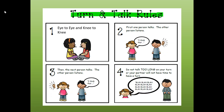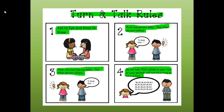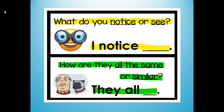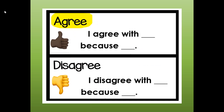Let's go over our turn and talk rules. Number one, eye to eye and knee to knee — make sure you face the person you're talking to. Number two, first one person talks, the other person listens. Number three, then the next person talks, the other person listens. Number four, do not talk too long or your partner will not have time to have a turn. For each pair of pictures, I'll ask: what do you notice or see? You can say, I notice or I see. How are they the same or similar? You can say they all or they both. Then you can tell your partner if you agree — I agree with you because — or disagree — I disagree with you because.